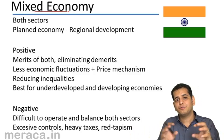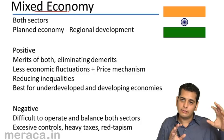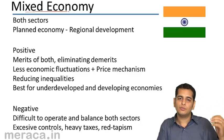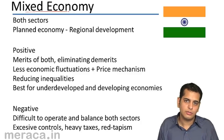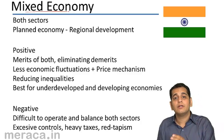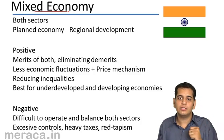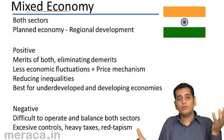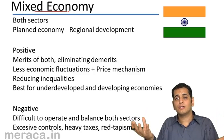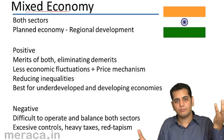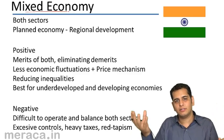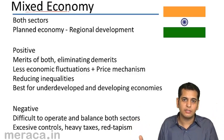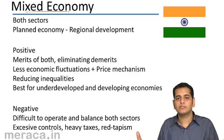A mixed economy has features of both. It allows private individuals to do business. At the same time, the government also owns the factors of production. So both sectors are coexisting — there is a private sector and a government sector, which is called the public sector.